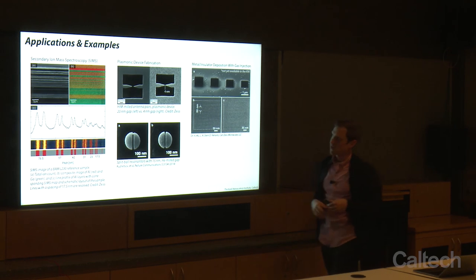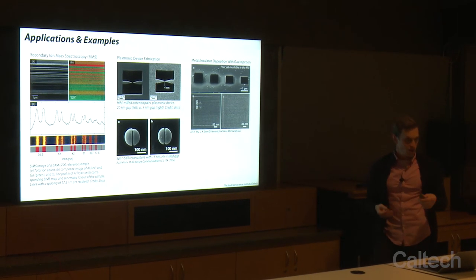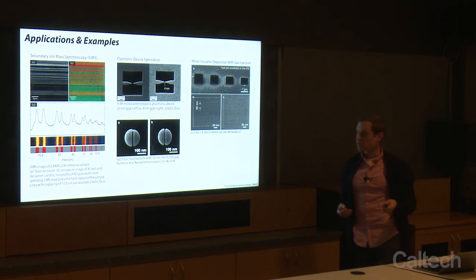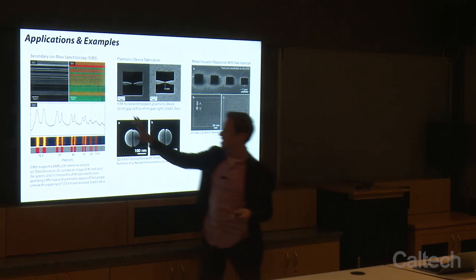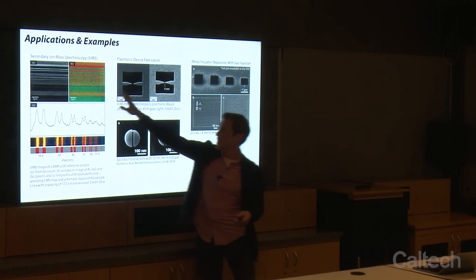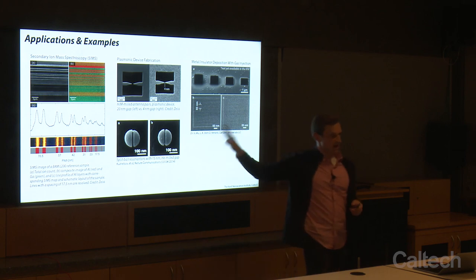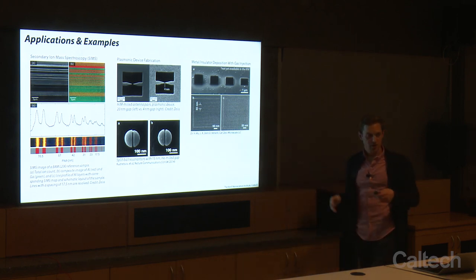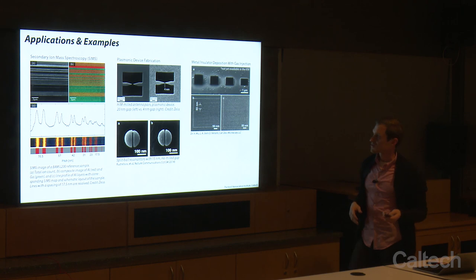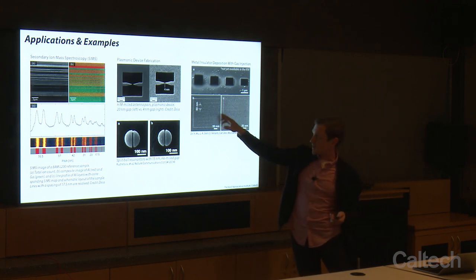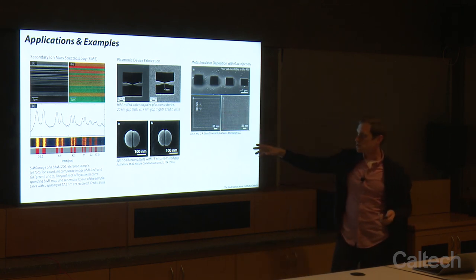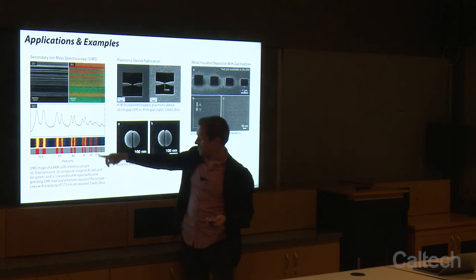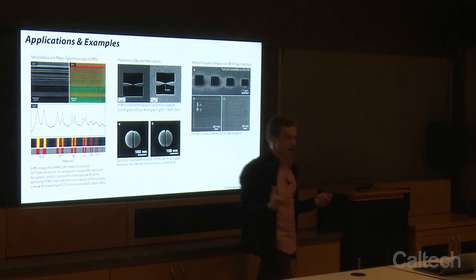We don't have energy dispersive spectroscopy with helium for reasons I'll go over later. So if you want elemental contrast, we use secondary ion mass spectroscopy. We don't have this in the KNI, but labs around the world — primarily Oak Ridge — are doing a lot of work with it, using the secondary ion mass spectrometer to get resolution on the order of tens of nanometers for chemical contrast.